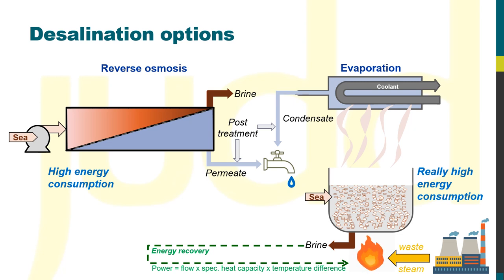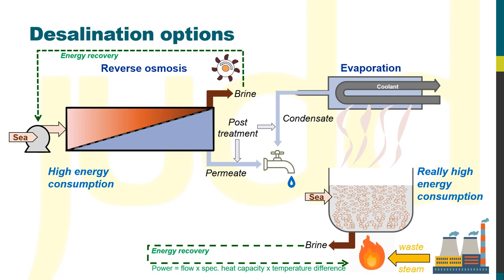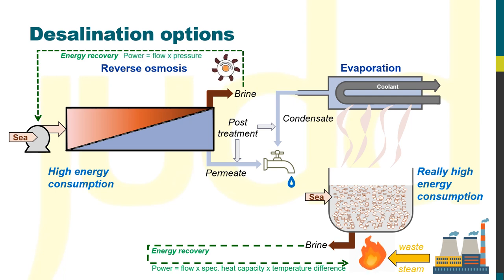In the RO process, the latent mechanical energy is recovered from the brine stream using a turbine. This converts the flow of high-pressure brine from mechanical into electrical energy.